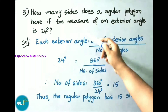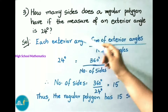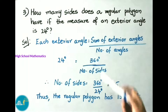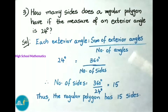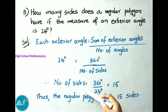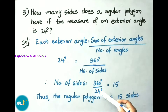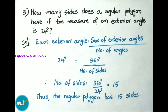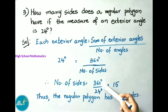See now question number 3: how many sides does a regular polygon have if the measure of an exterior angle is 24 degrees? Each exterior angle equals sum of exterior angles divided by number of sides. So number of sides equals 360 divided by 24, giving 15 sides. Thus the regular polygon has 15 sides.